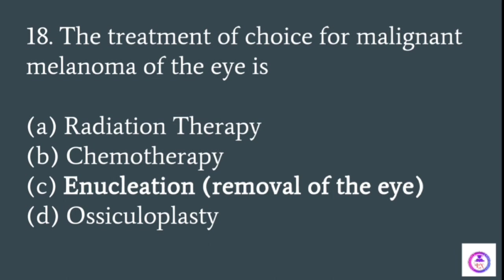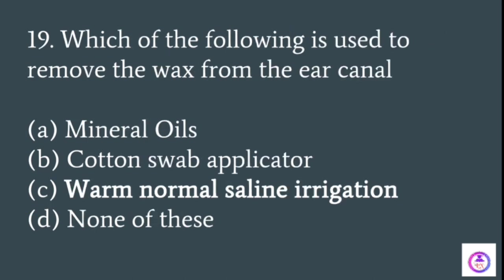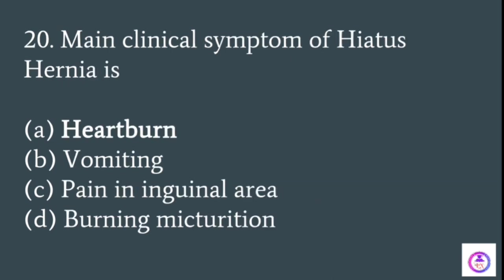The treatment of choice for malignant melanoma of the eye is enucleation, which means removal of the eyeball. To remove wax from the ear canal, we use warm normal saline irrigation. The main clinical symptom of hiatus hernia is heartburn.